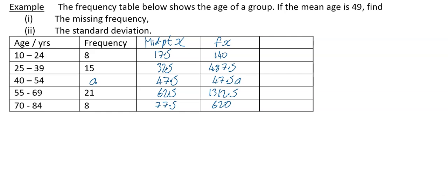Okay, we're now ready to actually find our mean. The mean, remember, the formula is sigma FX divided by sigma F. So we can work this all out and fill in what we know. We're told in the question the mean is 49. So your sigma FX, if you add up all the numerical things in your FX column, you're going to get 2560 plus 47.5A. And if you add up all your F's, the numerical F's, then you're going to have 52 plus A.